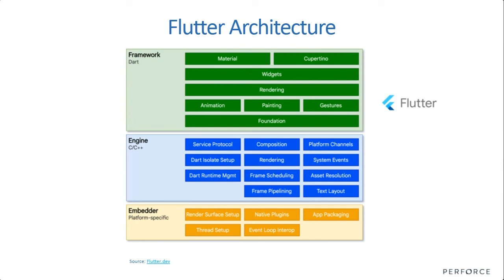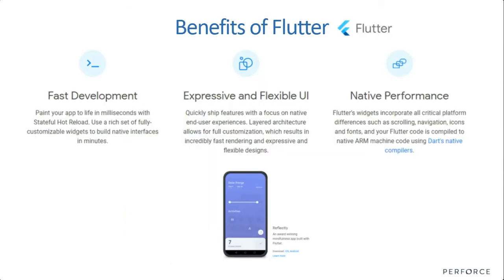This is a three-layer architecture of Flutter: the framework which is the secret sauce built on Dart, the engine that renders everything in C and C++ handling system events and composition, and the embedder which is the platform-specific deployer. The benefits of Flutter are fast development, flexible UI, and native performance because of the dedicated platform-specific embedders. You can see case studies at flutter.dev, including deployed production applications that won awards for UI/UX and performance. Flutter is growing and becoming important, based mostly on Dart development.